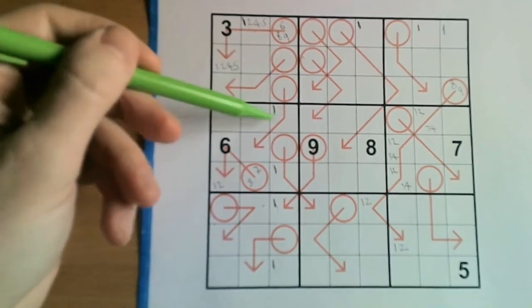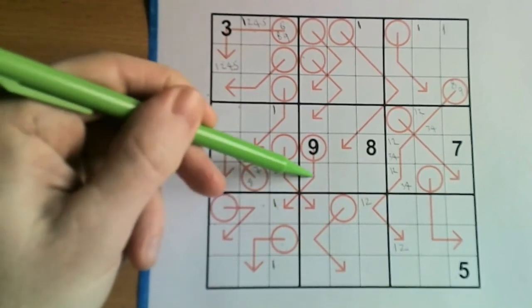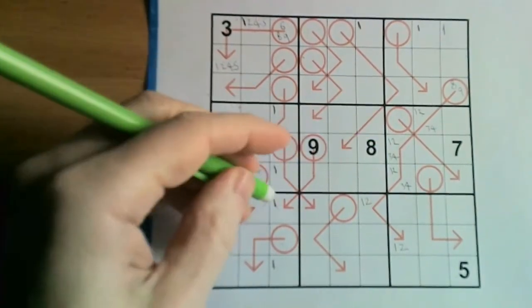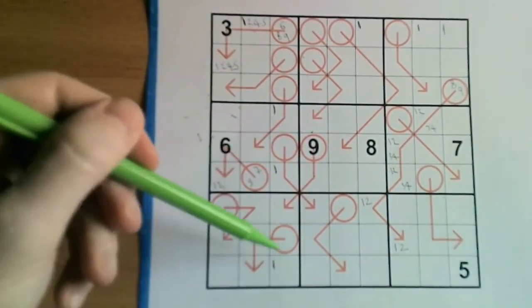And in fact just looking at the 1s I pencil marked down here, this can't actually be a 1. Because if this was a 1, this would be an 8. And we already have an 8. So in fact we instantly only have 3 locations for the 1 in this column.